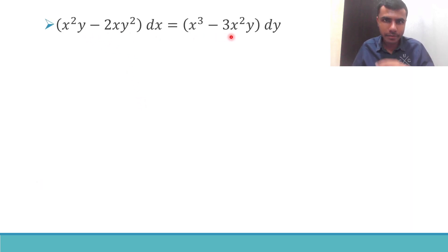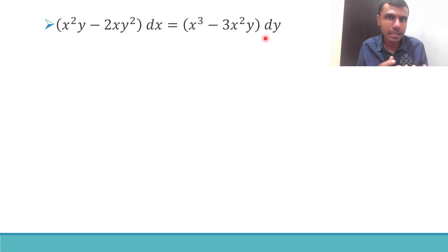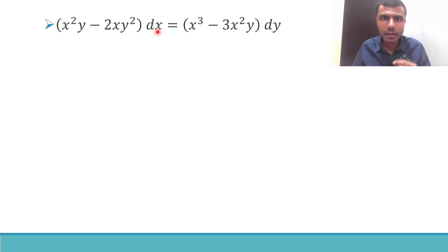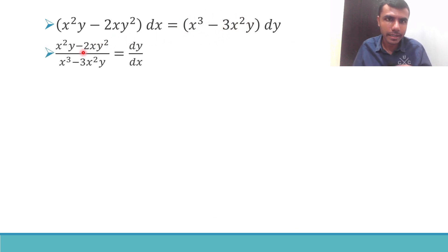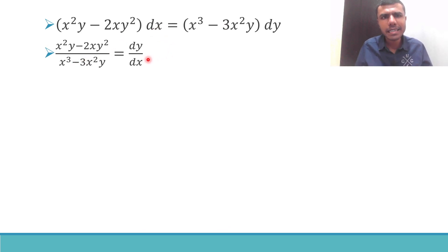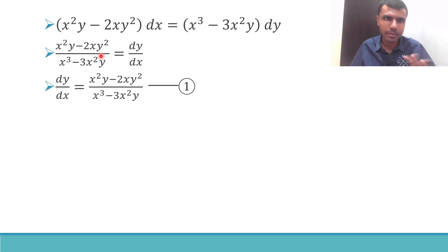So this is what we are given. First I want to write this given differential equation as dy/dx equal to something — that's my first target. Here I have dx and here I have dy, so I'm going to send this dx here and x³ minus 3x²y to the LHS. So I can write it as dy/dx equal to the RHS.